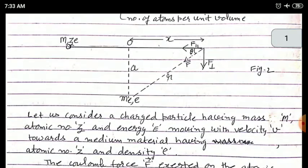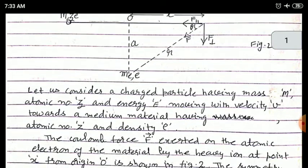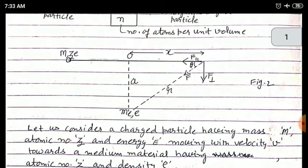Let us consider a charged particle having mass M, atomic number Z, and energy E, moving with velocity V towards some medium of atomic number capital Z and density rho. The Coulomb force F exerted on the atomic electron of the material by the heavy ion at point X from the origin O is shown in figure 2.